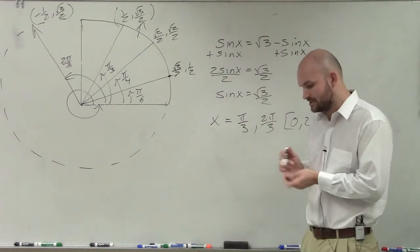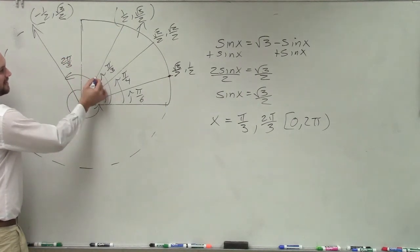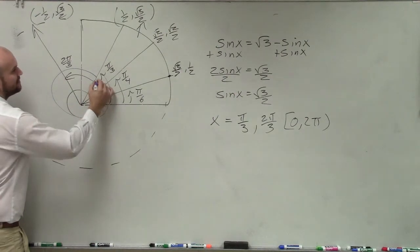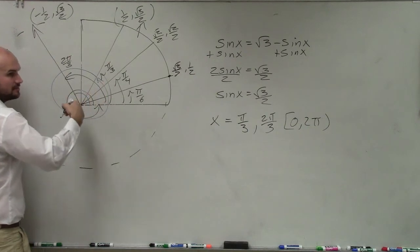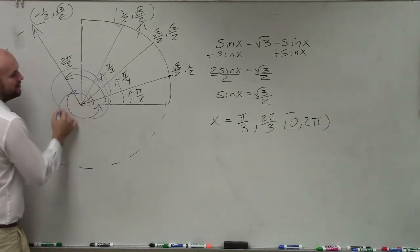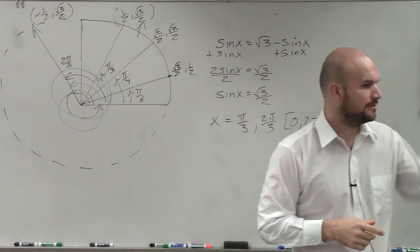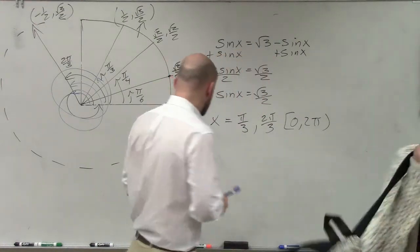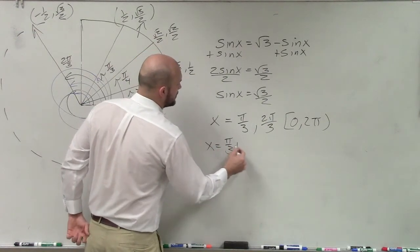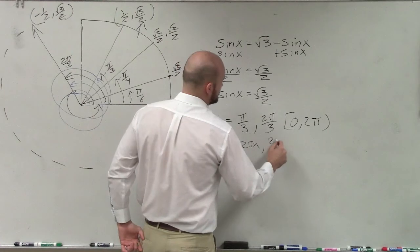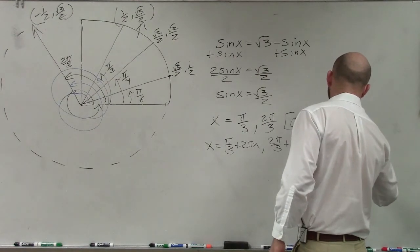However, if I said find all the solutions, the way that I looked at this is, remember, we can look at coterminal angles. And if I have pi over 3, to find the next solution, I'm going to have to add 2 pi. And I can continue adding 2 pi as many times as I need. The same thing for 2 pi over 3. You can keep on adding coterminal angles of 2 pi. So to find all of the solutions, I could say x equals pi over 3 plus 2 pi n comma 2 pi over 3 plus 2 pi n. And that is for all the solutions.